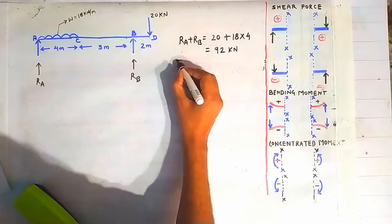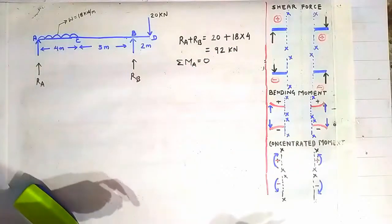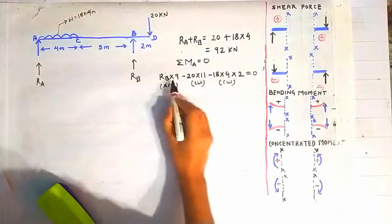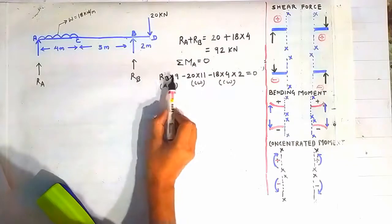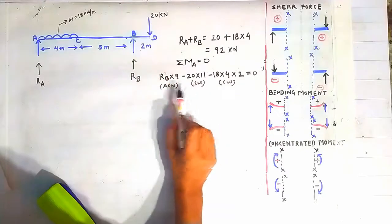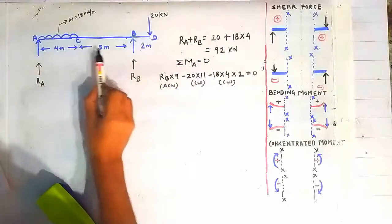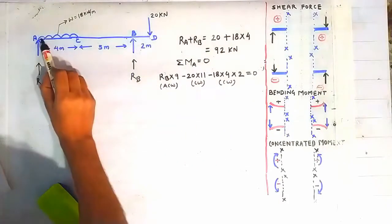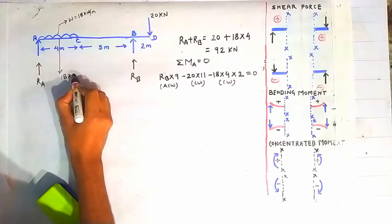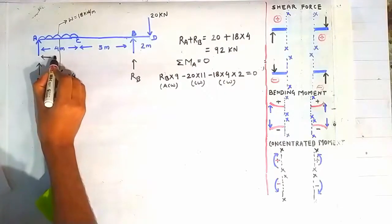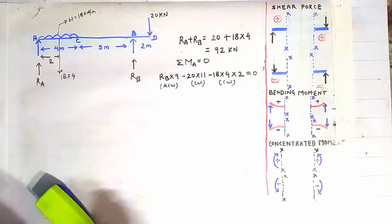Now we will consider moment about point A, so the summation of all moments about point A is equal to zero. Because of Rb there will be an anti-clockwise moment of magnitude Rb into 9 (distance 5 plus 4). Because of the 20 kN point load there will be a clockwise moment of 20 into 11 (distance 4 plus 5 plus 2). Because of the UDL there will be a load of 18 into 4 acting at a distance of 2 meters, producing a clockwise moment.